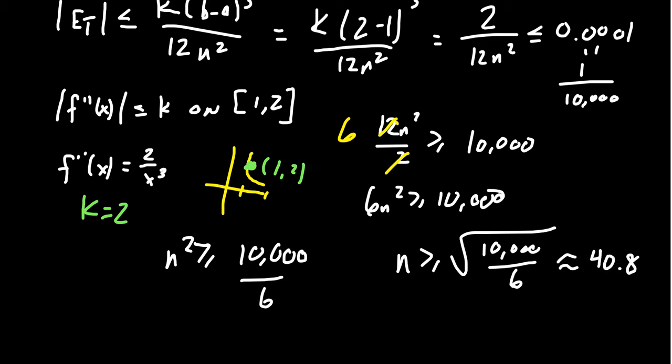Now notice that n itself has to be a whole number. It has to be an integer because this is the number of subdivisions we have to do. So 40.8 doesn't quite work. We need to choose n to be the next integer greater than 40.8, which is going to be 41. So to guarantee that we're accurate to four decimal places using the trapezoidal rule, we need to use at least 41 subdivisions.